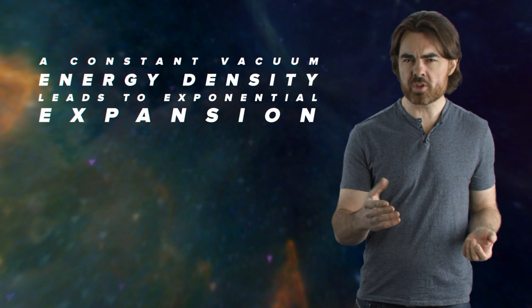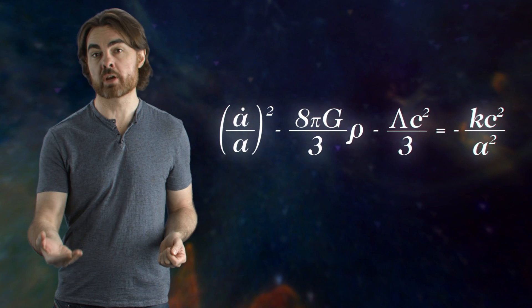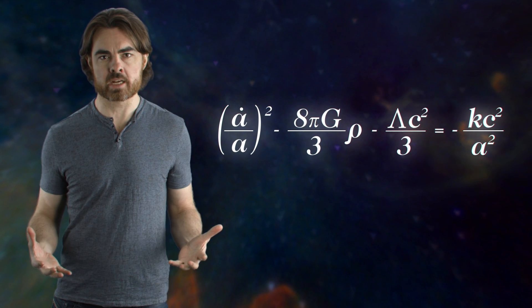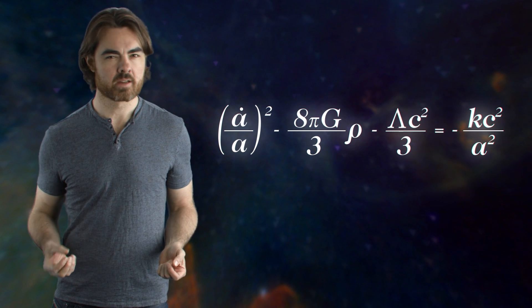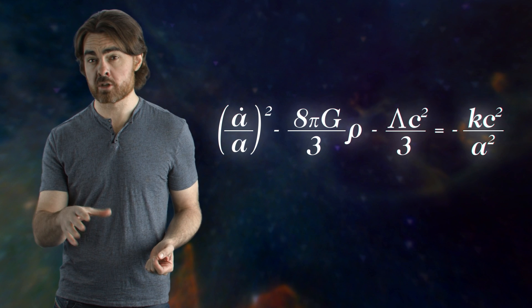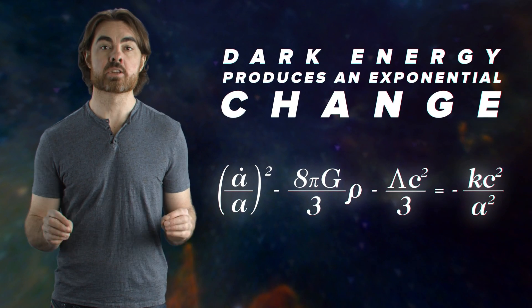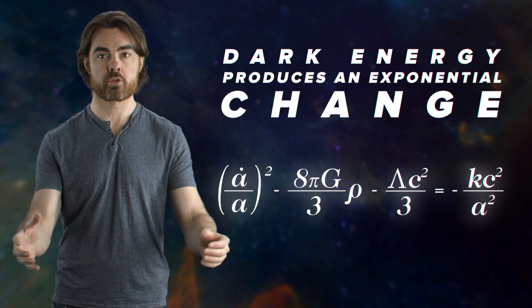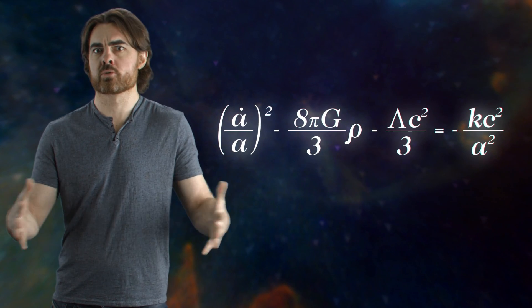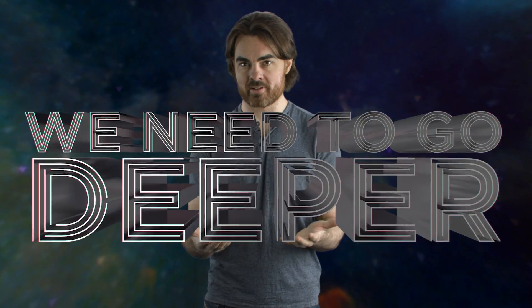The more space you have, the more dark energy you have — it's a constant energy density. The big weird fact about a constant vacuum energy density is that it leads to exponential expansion. We saw that general relativity demands this when we looked at the first Friedmann equation. But what physical thing about dark energy is producing this outward push, this anti-gravity? The first Friedmann equation that we've been playing with just isn't going to cut it. It only tells us that dark energy produces an exponential change in the size of the universe, not necessarily an exponential growth. Looking at that equation by itself, it could just as well be an exponential shrinking. To see why dark energy pushes outwards and accelerates the expansion, we need to go deeper. Its anti-gravitational effect emerges in the second Friedmann equation.